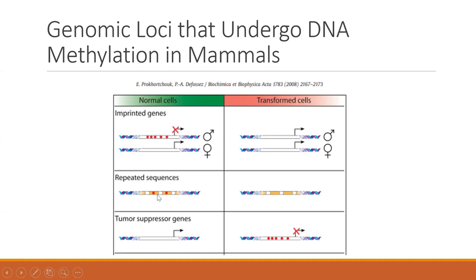Methylation can also occur at repeated sequences. When methylated, these sequences maintain a normal state; however, when repeat sequences lose methylation, it can lead to genomic instability and disease. Another important example is tumor suppressor genes, which are normally unmethylated. In transformed cells, methylation of the promoter region of these tumor suppressor genes can lead to tumor development.